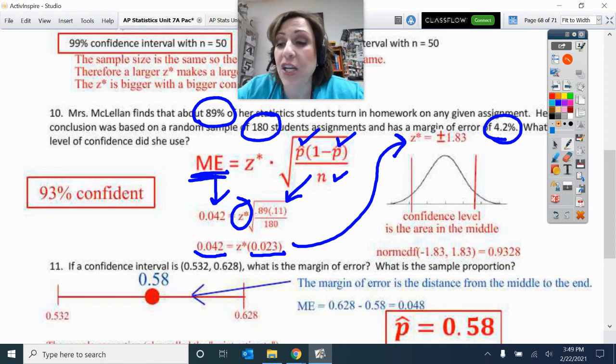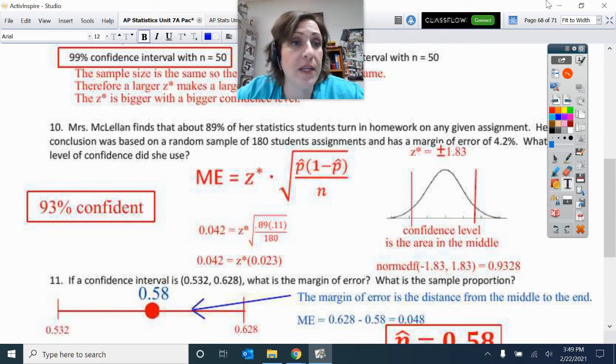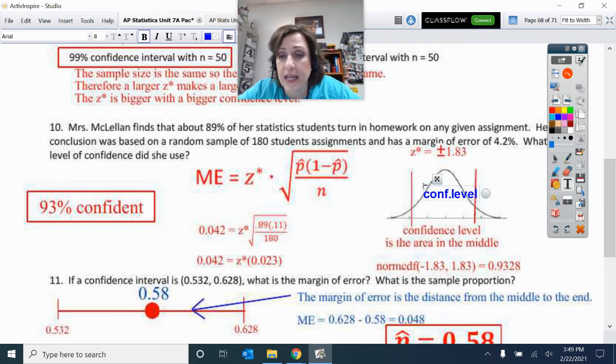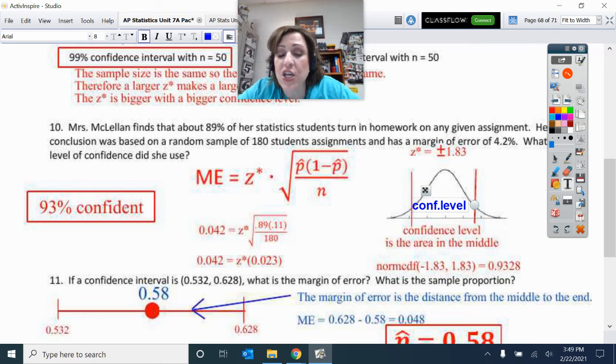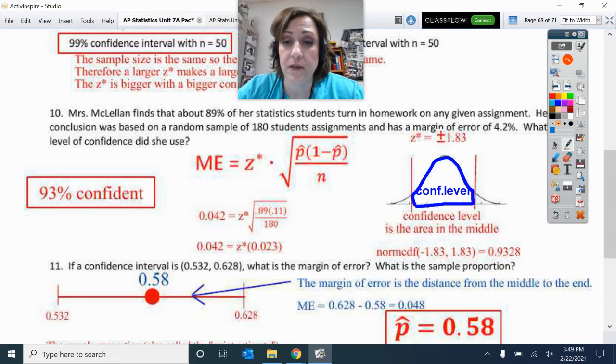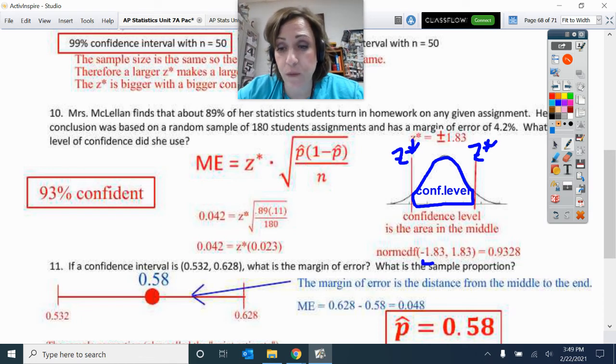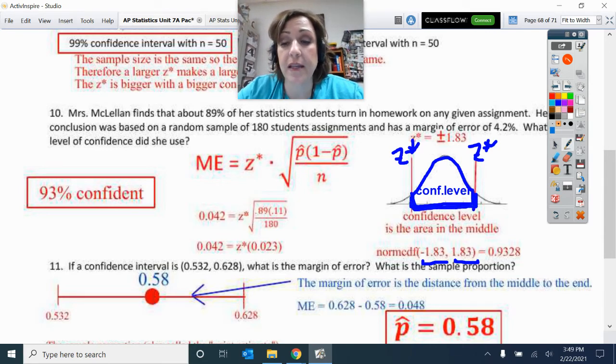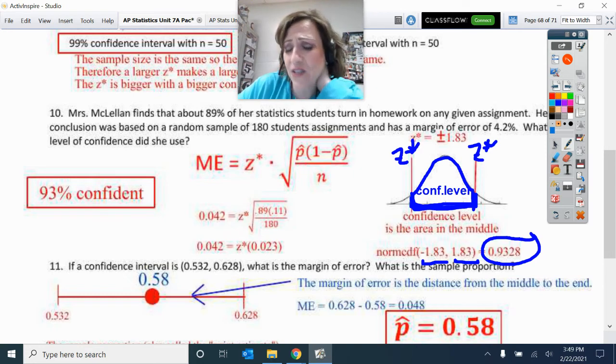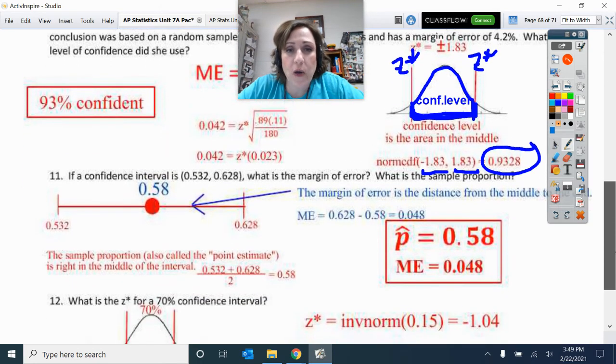But I know that confidence level is this area that's here in the middle. I want to type that in here. So this confidence level is what's here in the middle. I wrote it. So I need to figure out how much area this is from that lower Z star, from this lower Z star to this upper Z star. Well, so I'm going from negative 1.83 to the upper 1.83, and I norm CDF to get that area. And so that is how I got that area, and that then would be my confidence level. I don't know if you round appropriately or if you always round up. I'm not sure. So we're going to go with 93%. Okay, so there's 10 and 11.